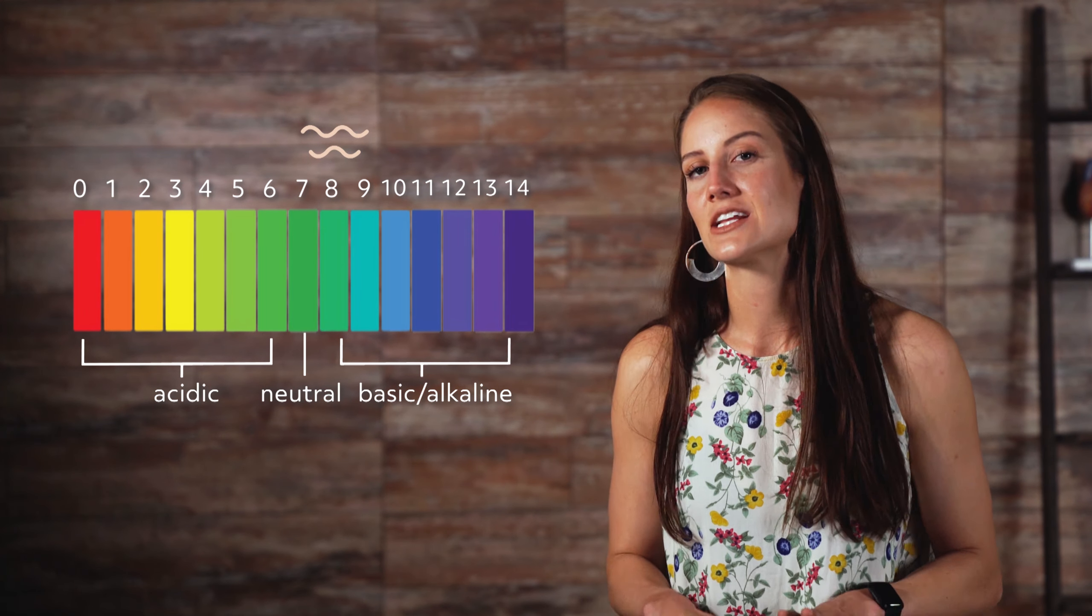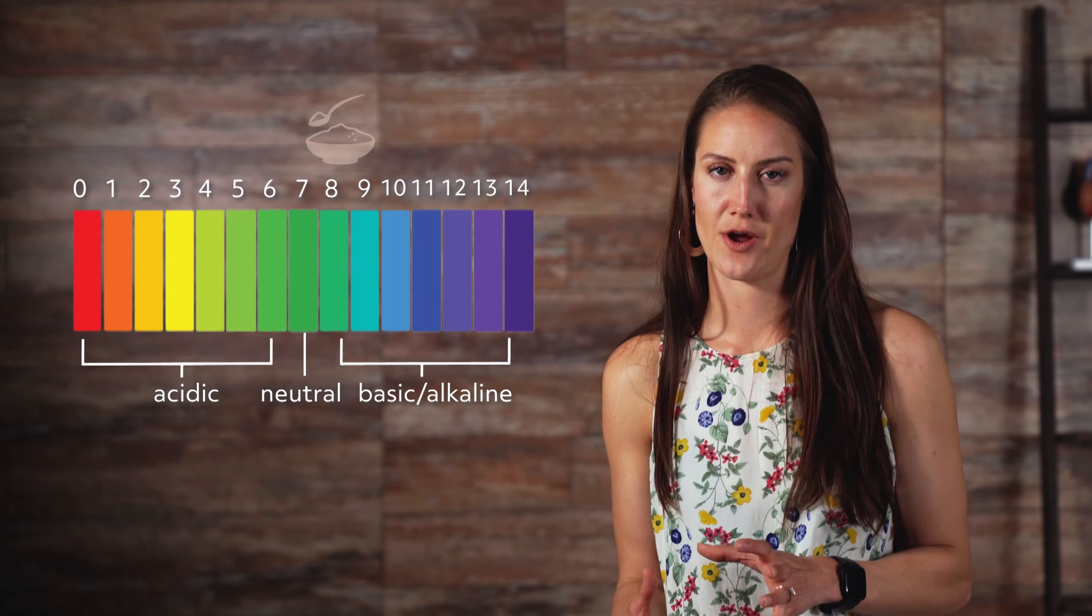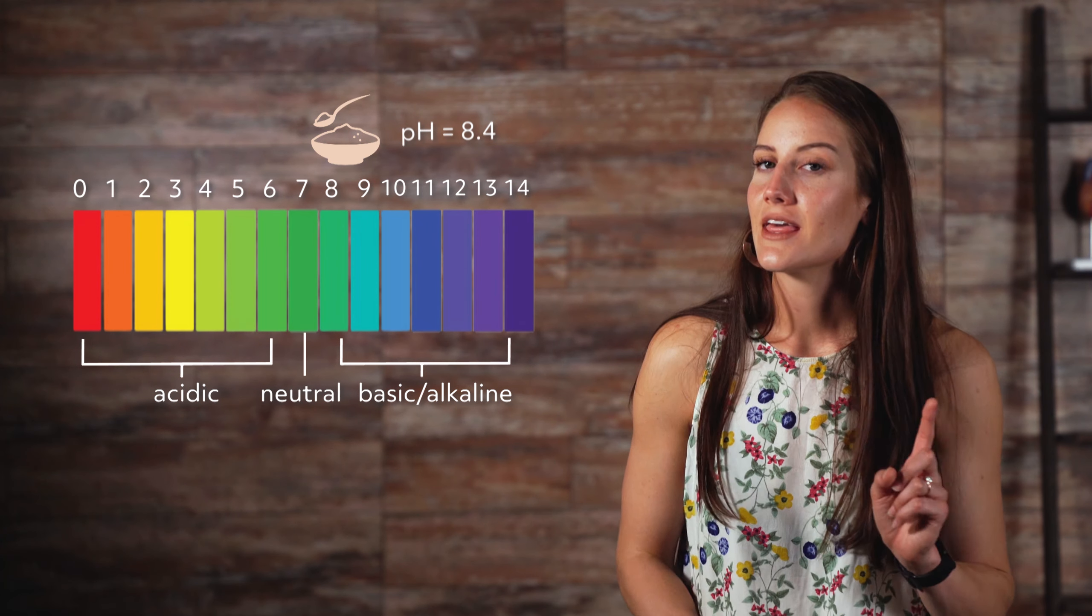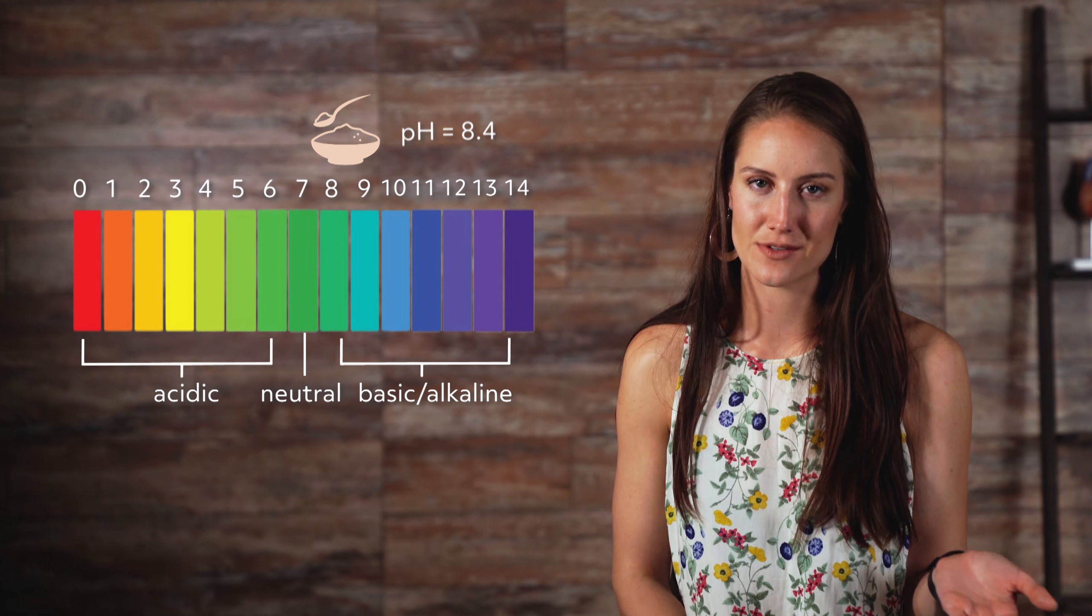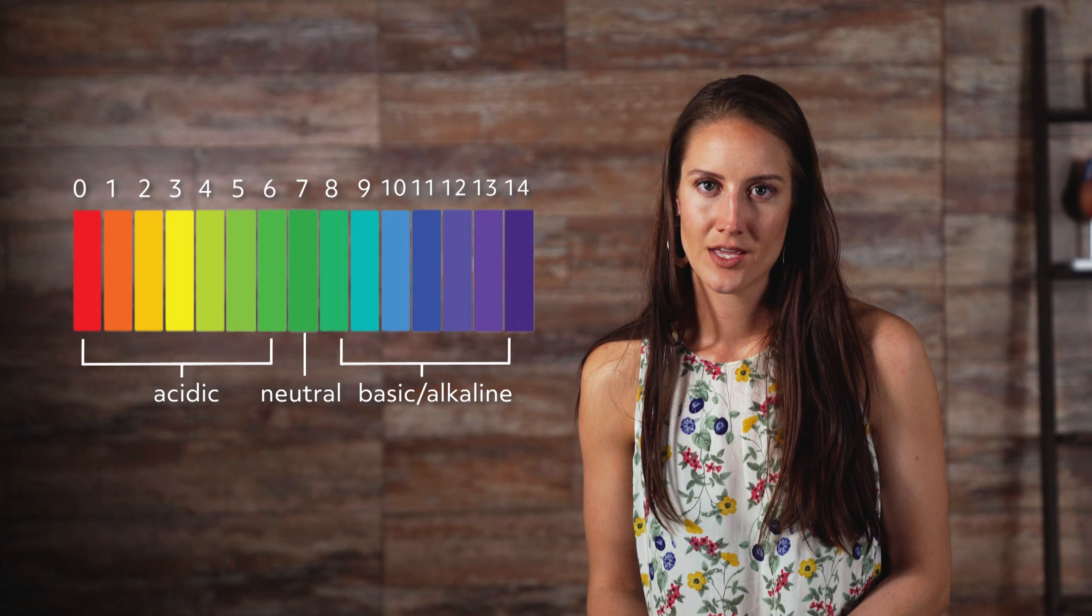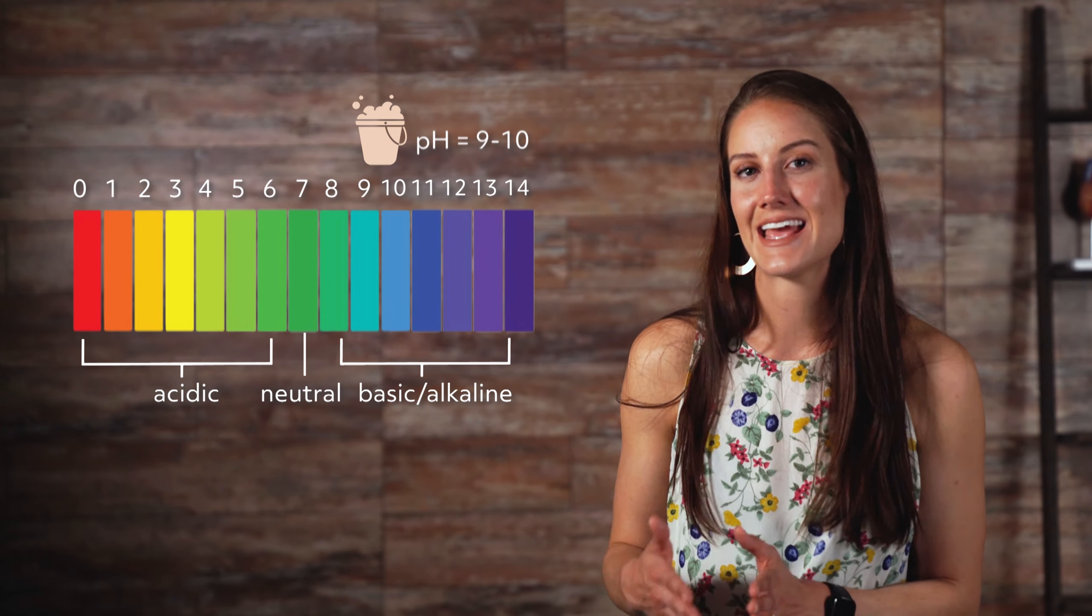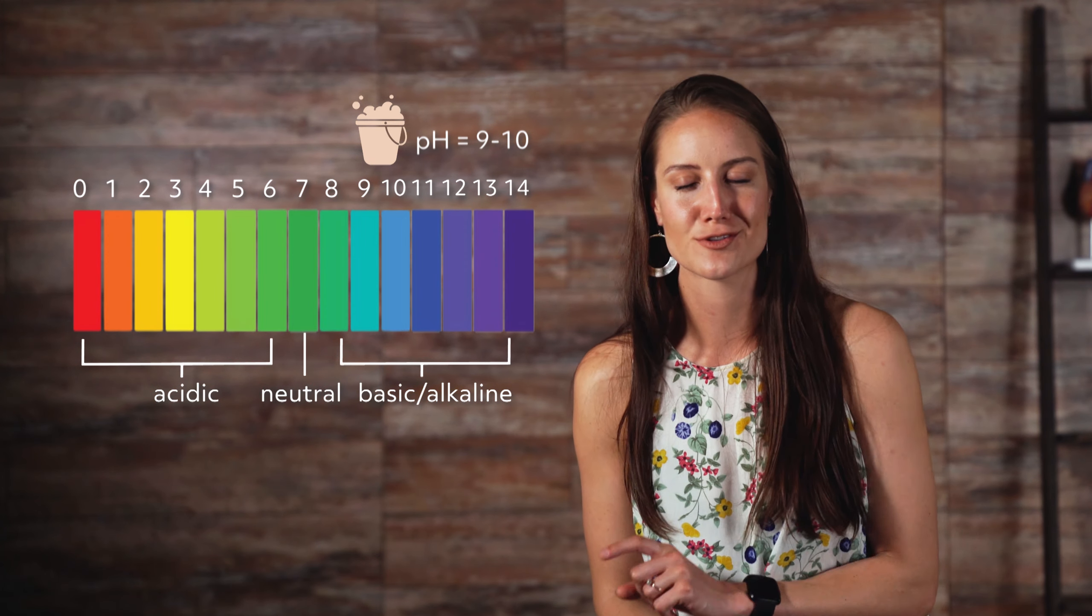Seawater has a pH value of approximately 8. Solutions of baking soda are mildly basic, with a pH value of 8.4. Therefore, baking soda is used to clean up small acid spills in chemistry labs. Soapy water has a pH value of 9 to 10, which helps to remove grease from your skin or from dirty dishes.